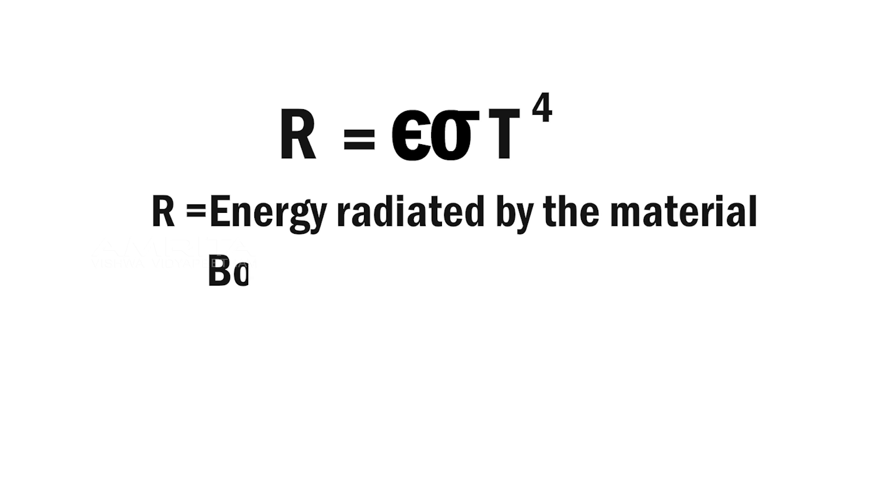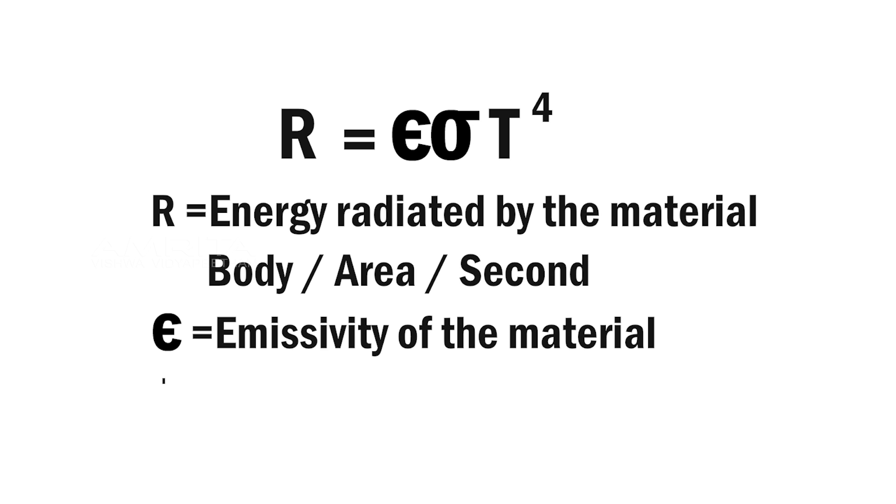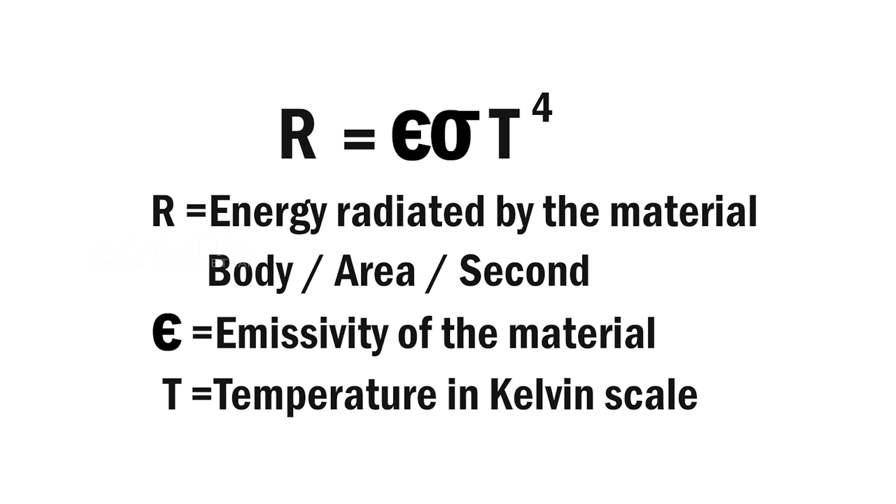Mathematically, it can be expressed as R equals epsilon sigma T raised to 4, where R is the energy radiated by the material body per area per second, epsilon is the emissivity of the material, and T is its temperature in Kelvin scale.